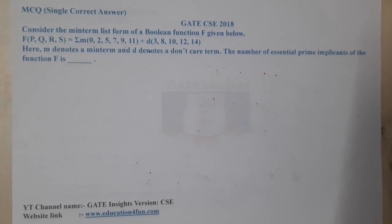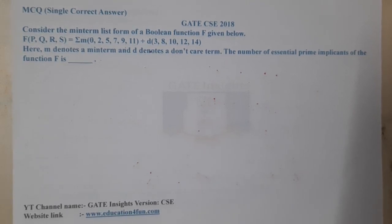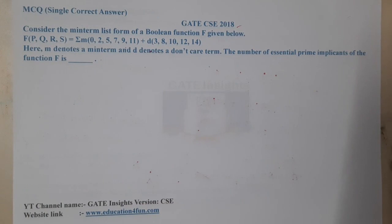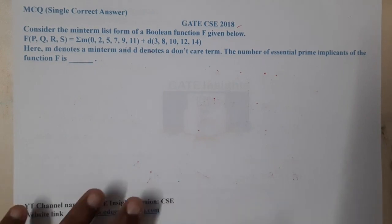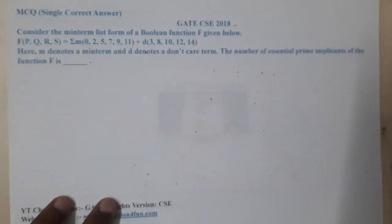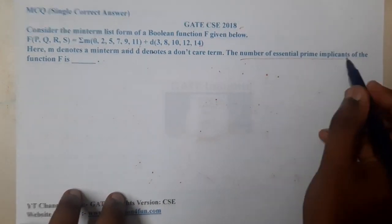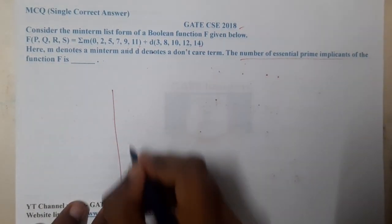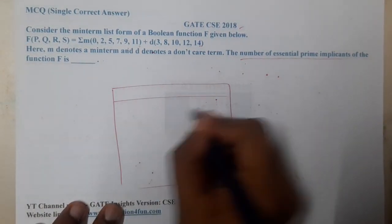Hello guys, we are back with our next lecture. This question belongs to GATE CSE 2008. They gave the minterms as well as the don't care conditions, and they are asking the number of essential prime implicants. So let us draw the K-map for four variables.